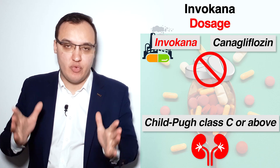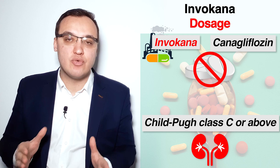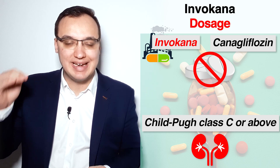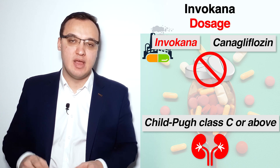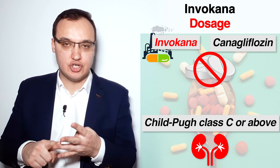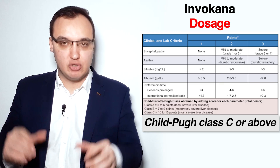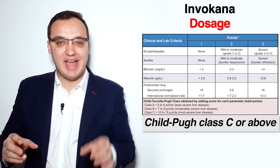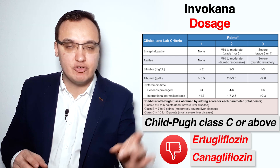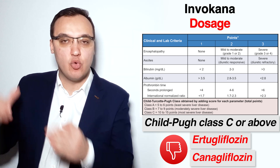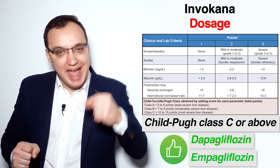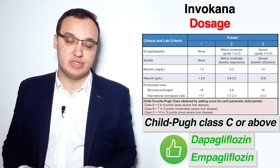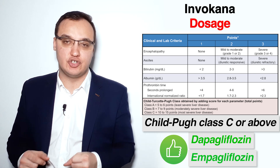Canagliflozin is usually not recommended in patients with severe liver insufficiency with a Child-Pugh class C or above. We have four classes of liver insufficiency: A, B, C, and D. Ertugliflozin and Canagliflozin are not allowed in patients with class C or D. Dapagliflozin and Empagliflozin, on the other hand, have shown very good results in patients with severe liver insufficiency, so they can be used.